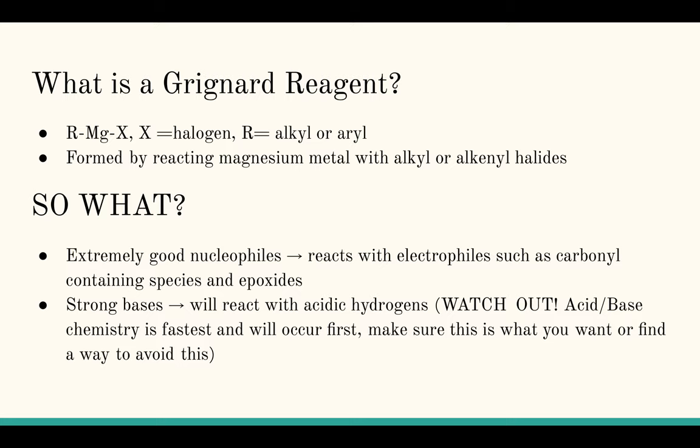That shows the general structure of a Grignard Reagent with the R being an alkyl or an aryl bonded to a magnesium which is bonded to a halogen. And these are formed by reacting magnesium metal with alkyl or alkenyl halides.